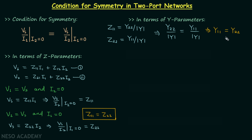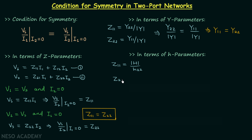Remember that condition. Now we find the condition for symmetry in terms of H parameters. We know Z11 equals the determinant of the hybrid parameters matrix divided by H22, and Z22 equals 1 over H22. Setting Z11 = Z22, the determinant divided by H22 must equal 1 over H22. Therefore, the determinant of the H parameters matrix must equal 1. This is the condition for symmetry in terms of H parameters.